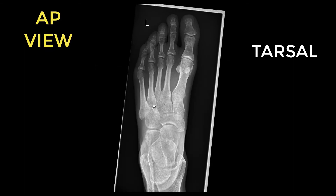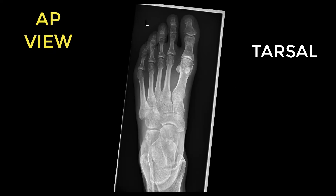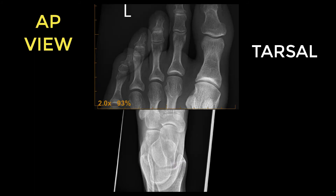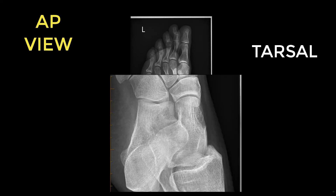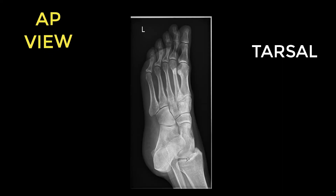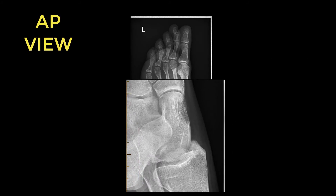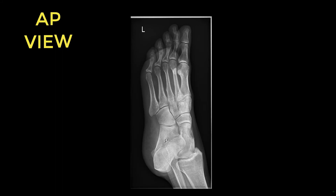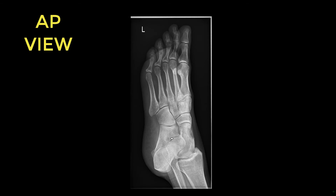Coming more proximally, you reach the tarsal bones. These are best seen on the oblique view. Right next to the ankle joint — where the tibia bone is — is the talus. Next to the talus is the calcaneum bone, so the talus and calcaneum are the most proximal tarsal bones.